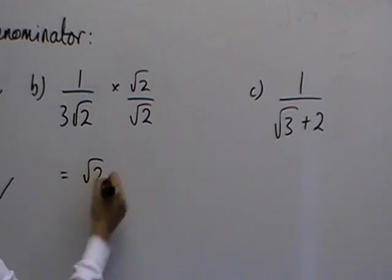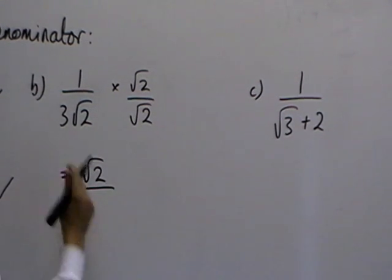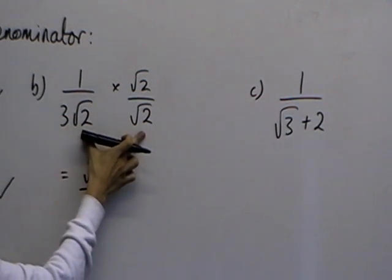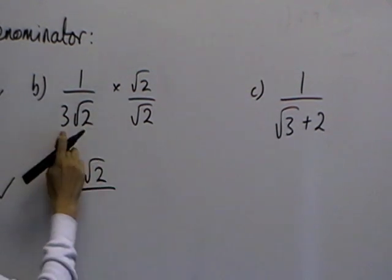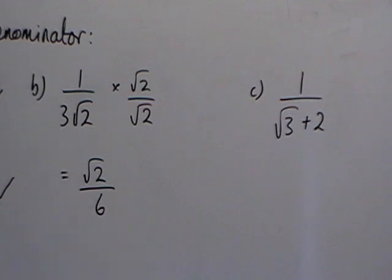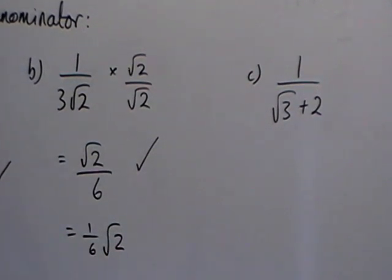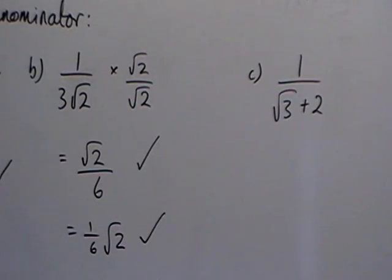So we multiply the top together: 1 times root 2 is just root 2. And then on the bottom we've got 3 times root 2 times root 2. So root 2 times itself is 2, times by 3 is 6. So you can leave your answer like this, but again please be aware that that can be written as a sixth of root 2. Either of those would be fine.